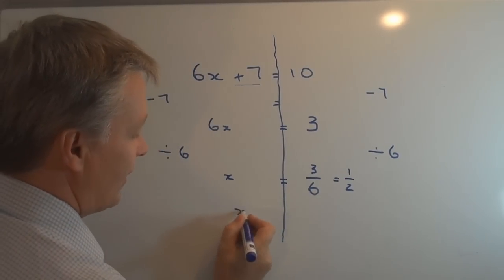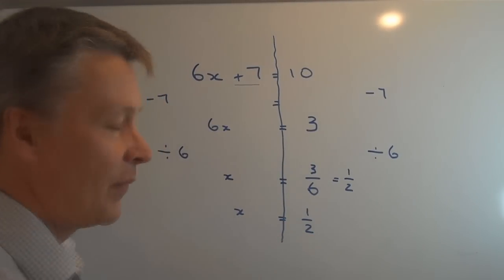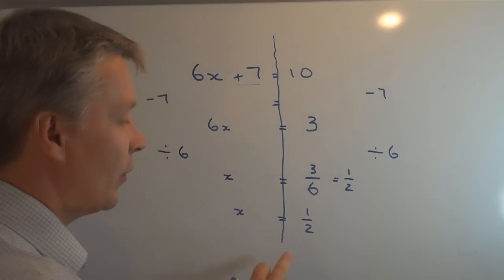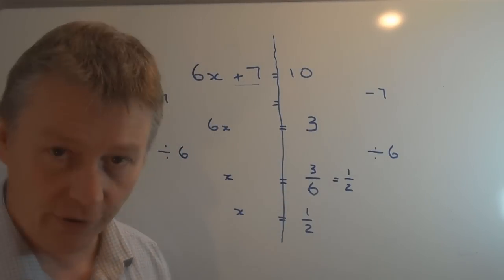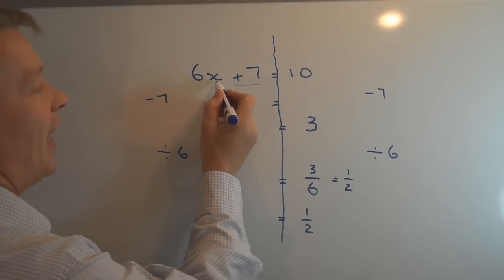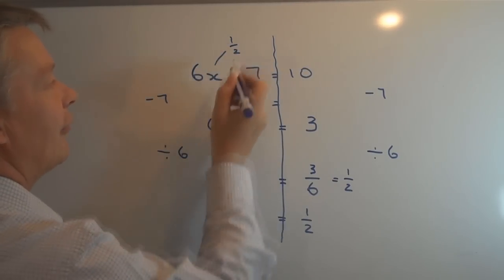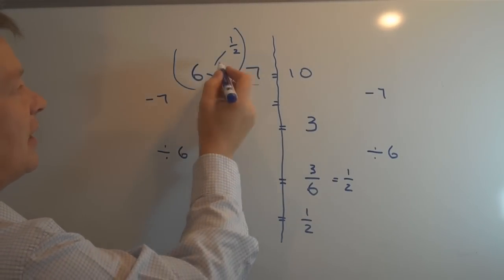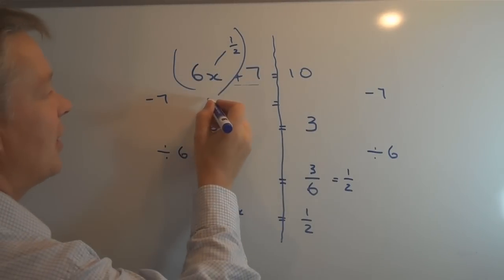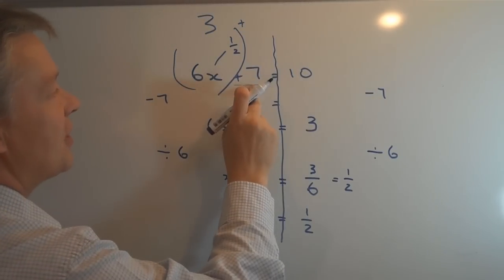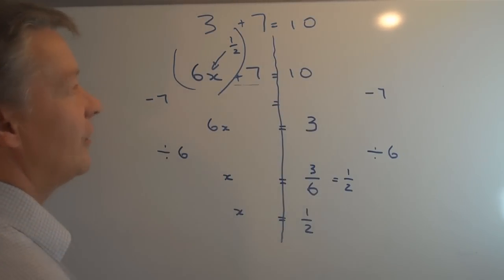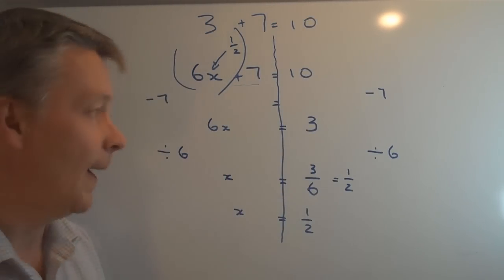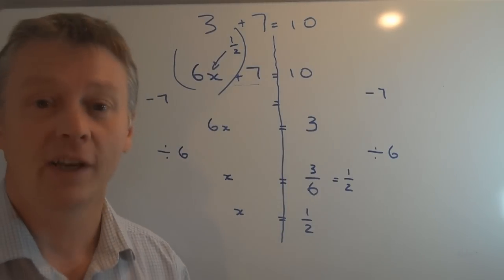To make sure that I'm correct, I can feed the half back into my original formula and make sure that it balances. If x has a value of one half, then here I have 6 times 1/2 which is 3, plus the 7 which is here, equals 10 which is there. So it's proven that my value of x as being a half is correct for this linear equation.